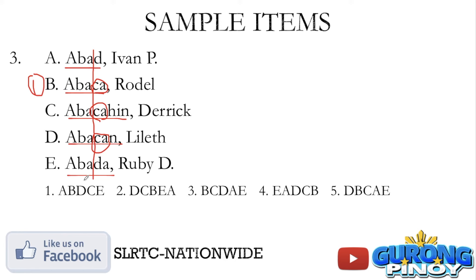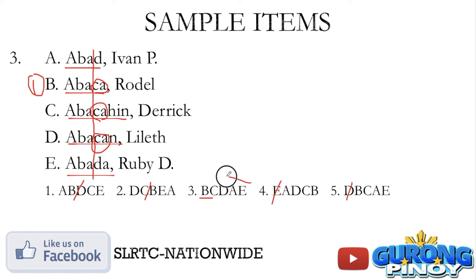Checking our choices: number 1 starts with letter A — eliminate. Number 2 starts with letter D — eliminate. Number 3 starts with B — that's correct and according to our rules. Number 4 starts with letter E — eliminate. Number 5 starts with letter D — eliminate. So number 3 should be your answer.